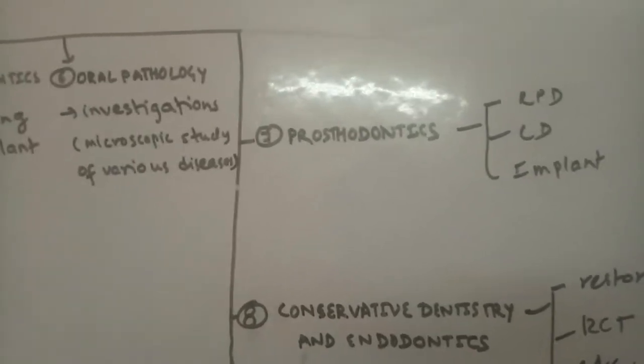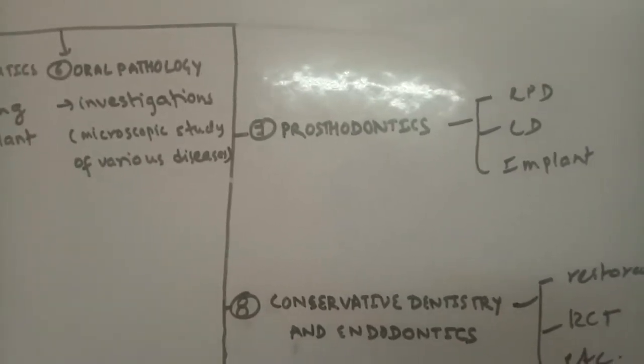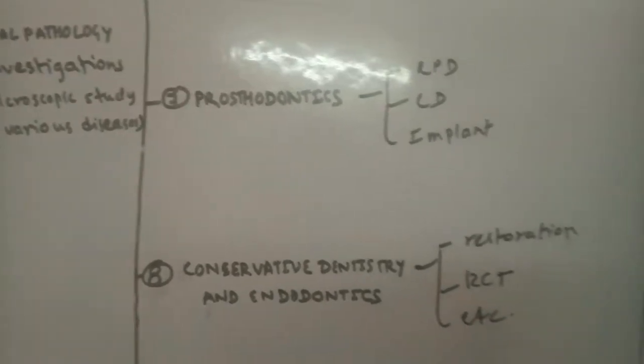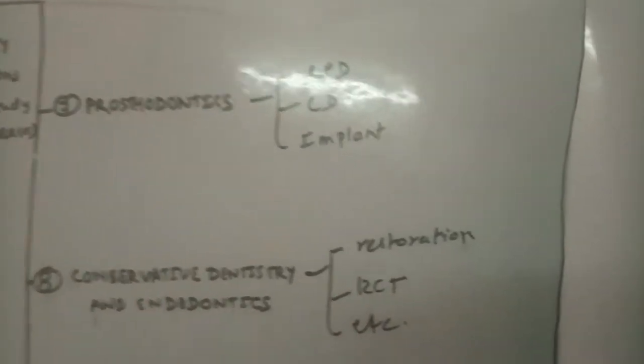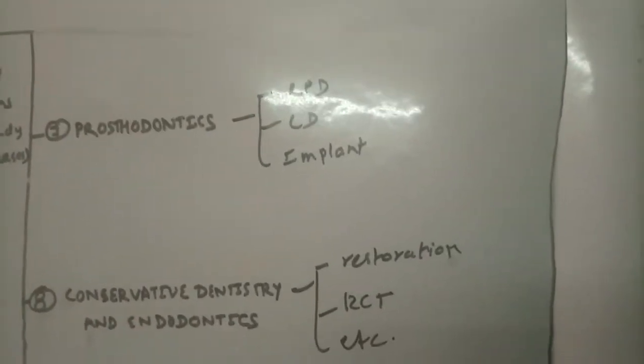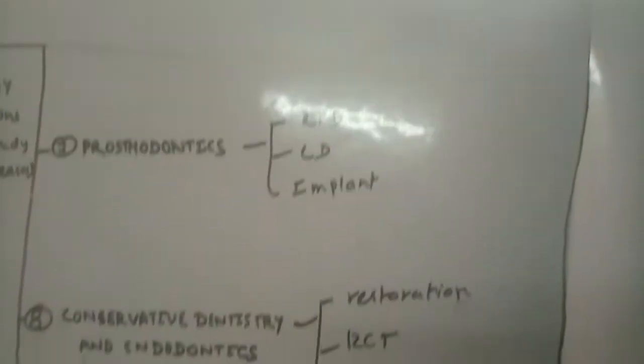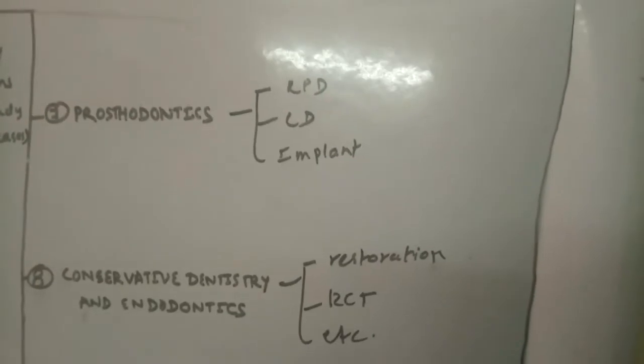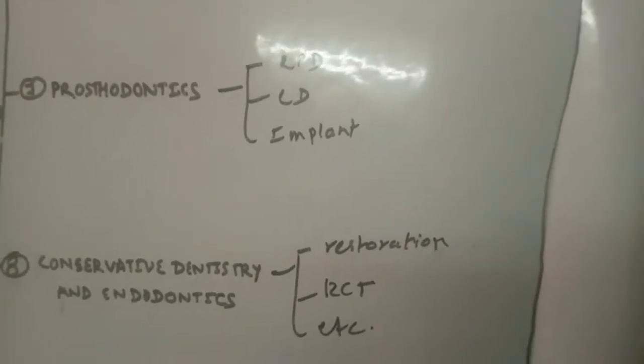Oral pathology also deals with the macroscopic study of various diseases. The seventh important branch is prosthodontics, which mainly deals with oral rehabilitation.